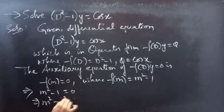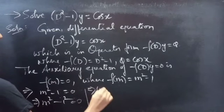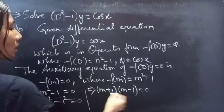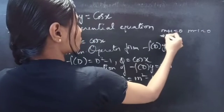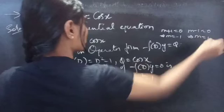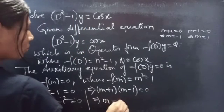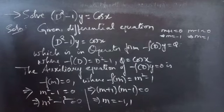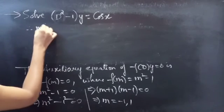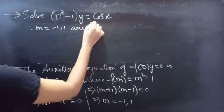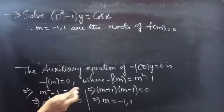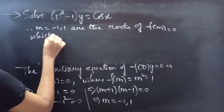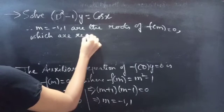We can write m² − 1 as m² − 1², which is of the form a² − b². So we factor it as (m + 1)(m − 1) = 0. Equating each factor to zero: from m + 1 = 0, we get m = −1; from m − 1 = 0, we get m = 1. So m = −1, 1 — the roots of the auxiliary equation m² − 1 = 0, which are real and distinct.